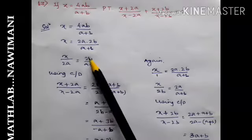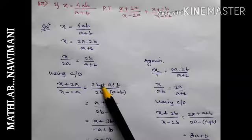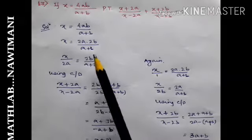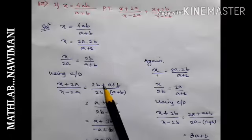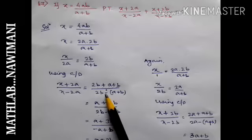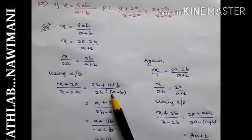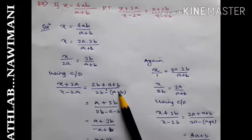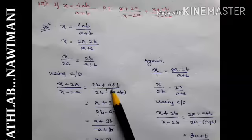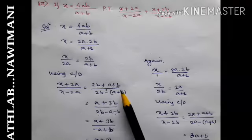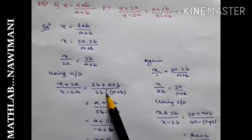If there is plus, no problem, you don't have to put bracket. And 2b minus a plus b. Whenever there is minus and after minus there are two or three terms, then always you have to put one bracket. You must not forget to put this bracket.